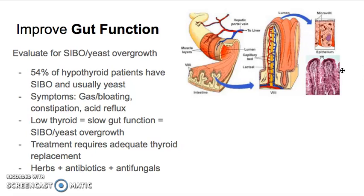Number four is gut function. Coming back to SIBO and yeast: 54% of hypothyroid patients have SIBO, and if you have SIBO you usually have yeast with that. Symptoms to look for include gas and bloating 30 to 60 minutes after a meal, chronic constipation — patients may not go but once every two to five days — and some degree of acid reflux or GERD. The important thing is you can treat SIBO with medications and supplements, but if you don't treat the underlying thyroid problem, it's going to come right back.